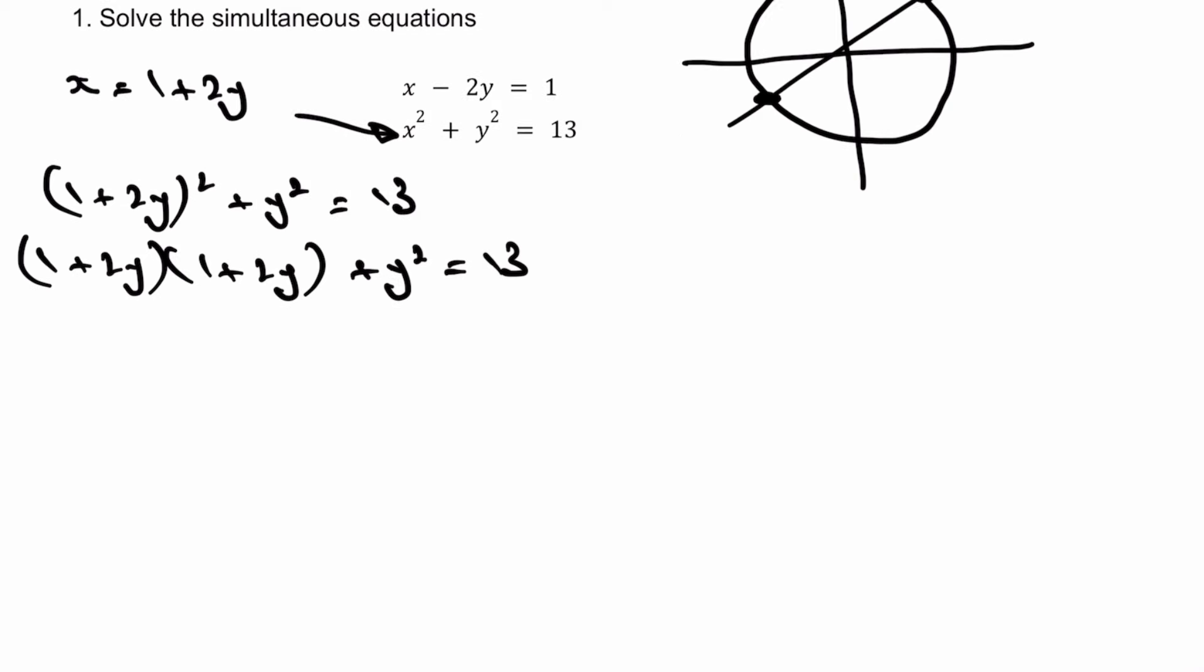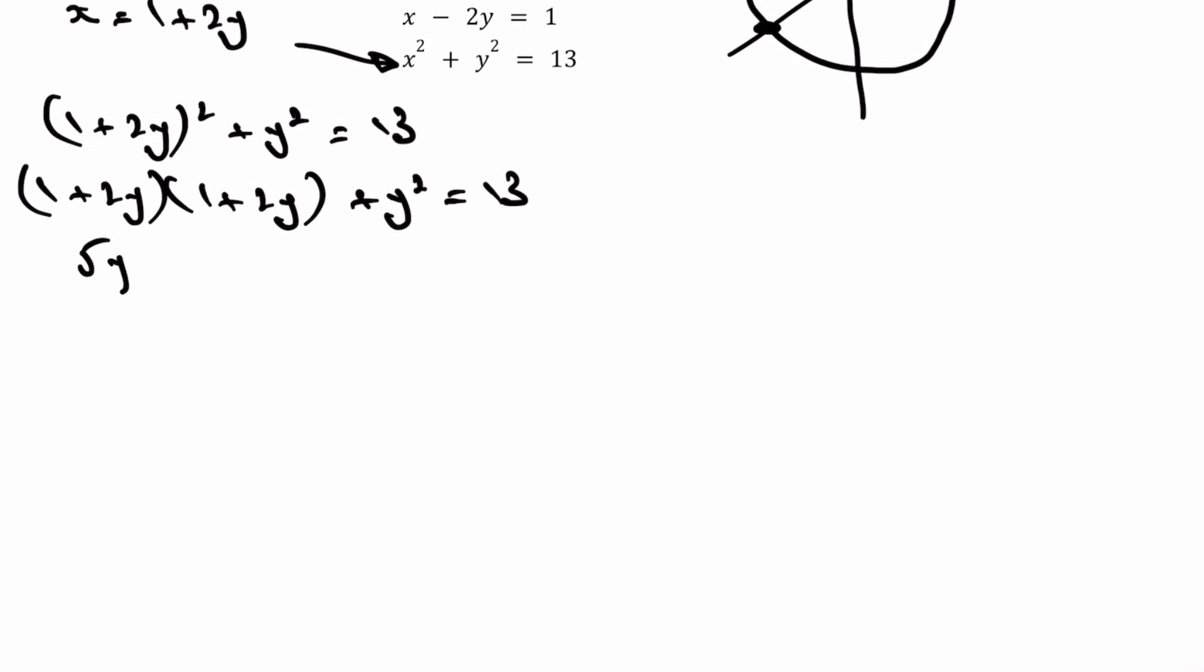you should end up with something that looks like 5y squared plus 4y minus 12 equals 0. If you're not sure about that, and I have jumped a couple of steps there, if you're not sure, please do let me know in the comments, and I'll explain it a little bit more.